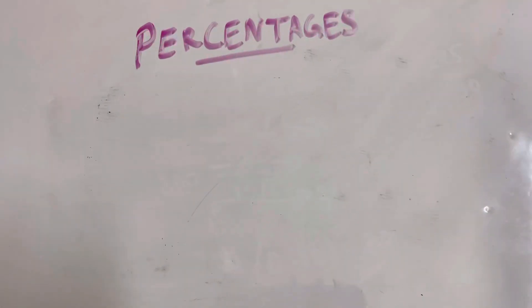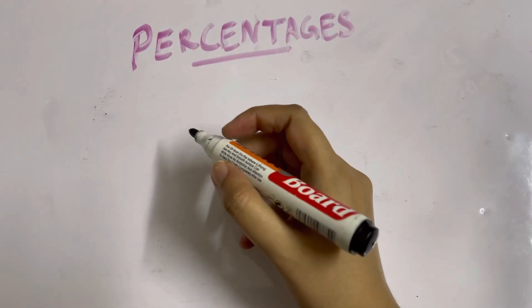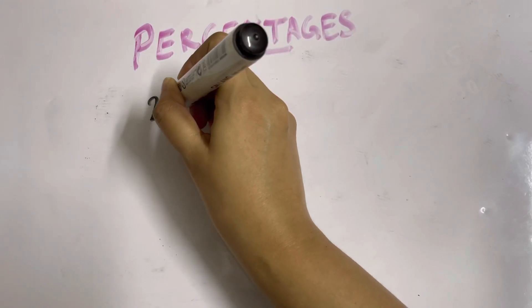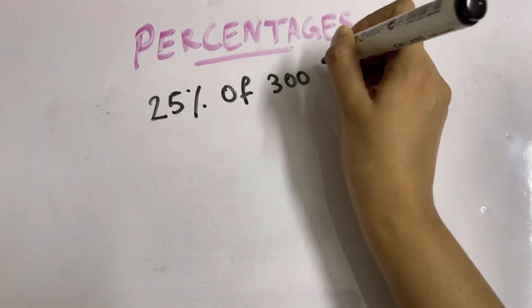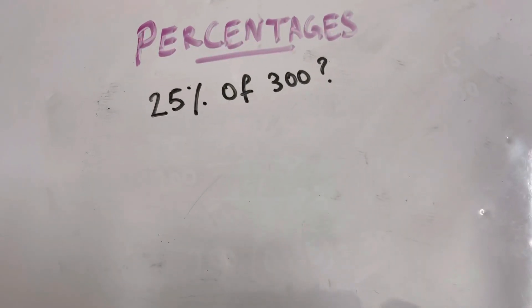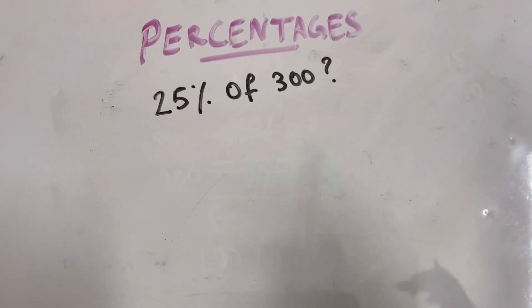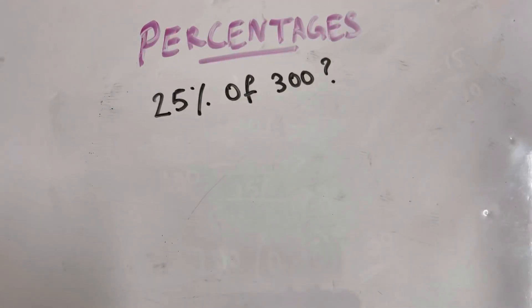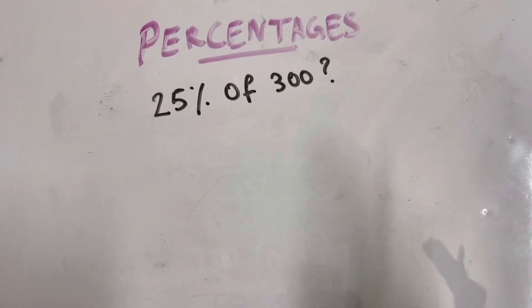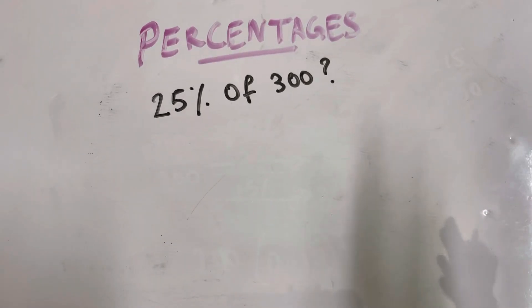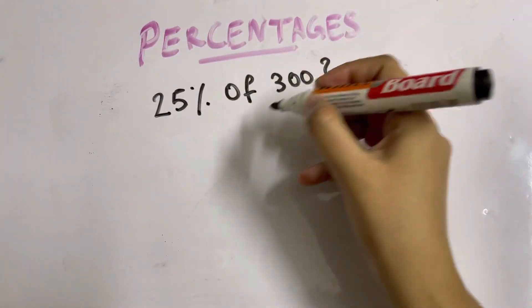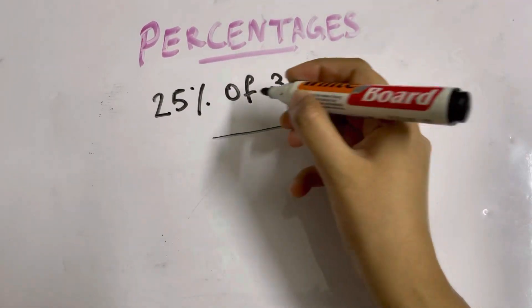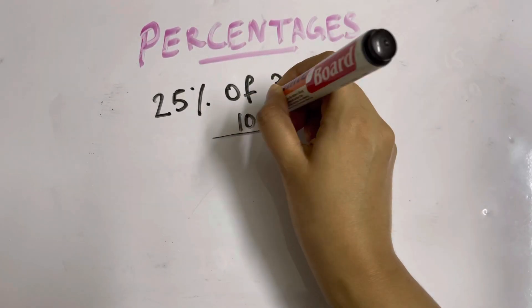Let's find out 25% of 300. Try to find the answer on your own — pause the video, then recheck it for the answer. Let's start: we usually begin with 10% because it's very easy to calculate with.